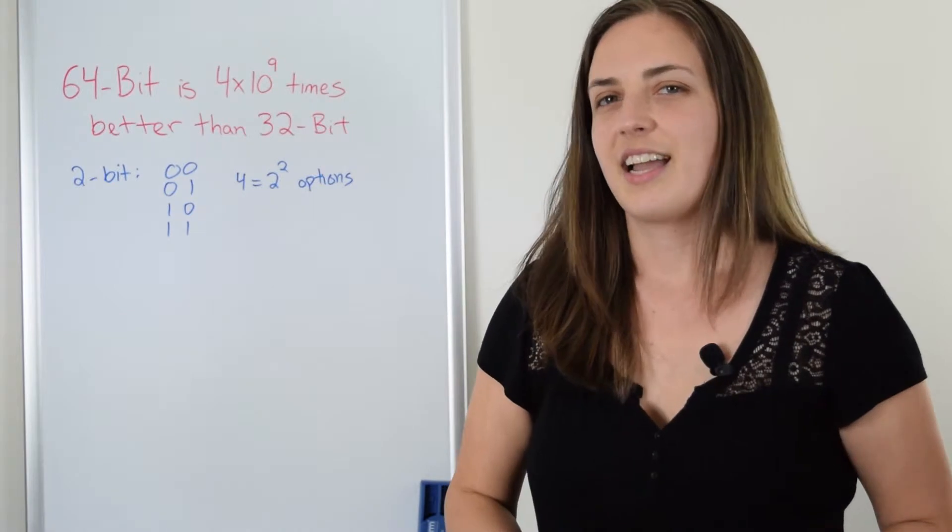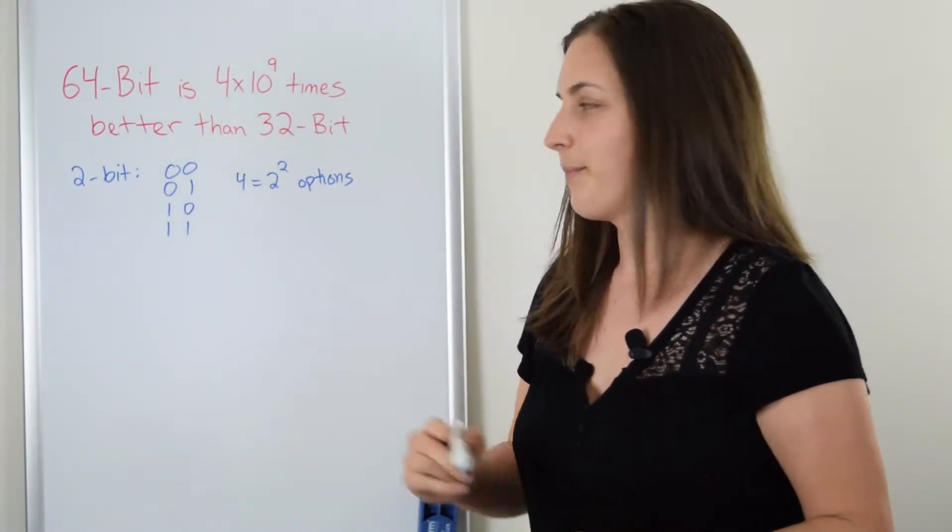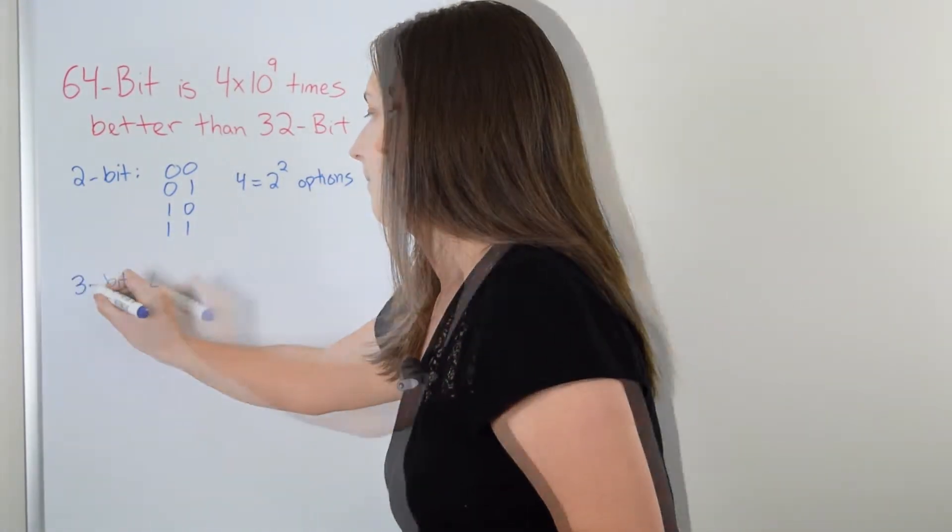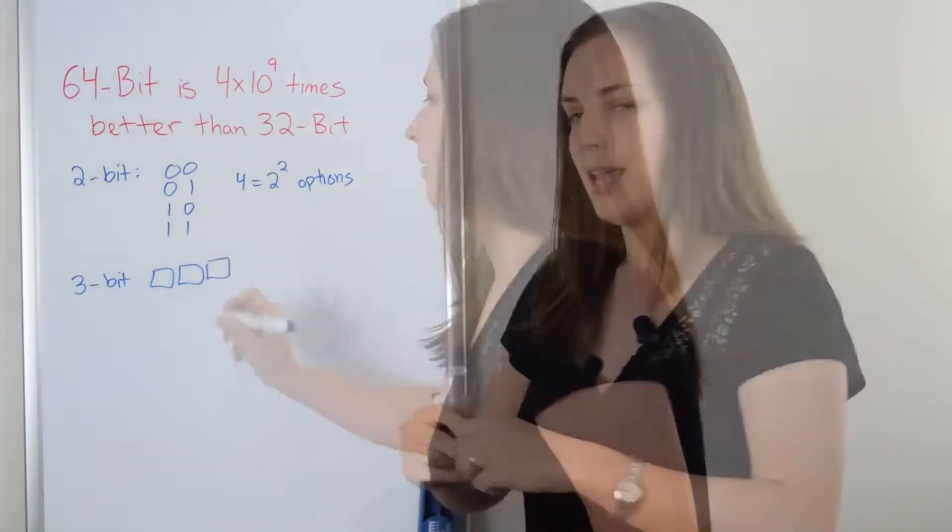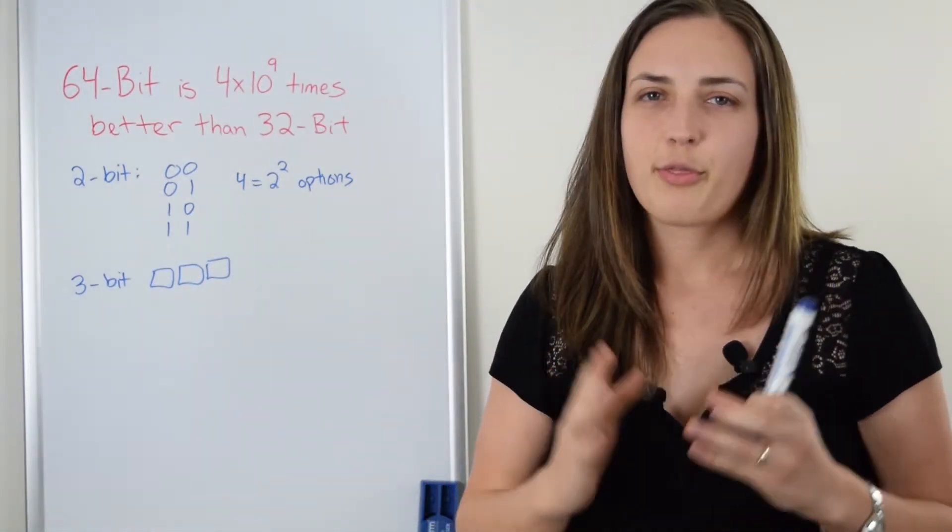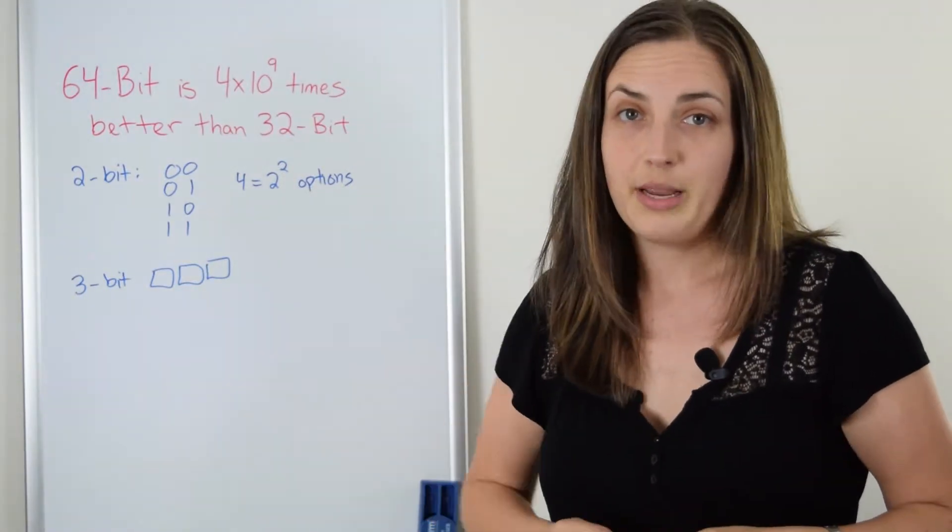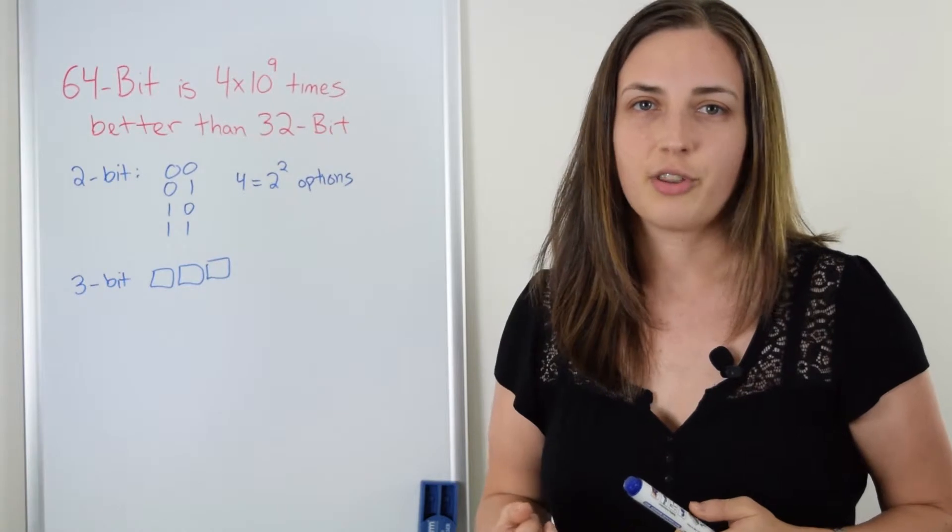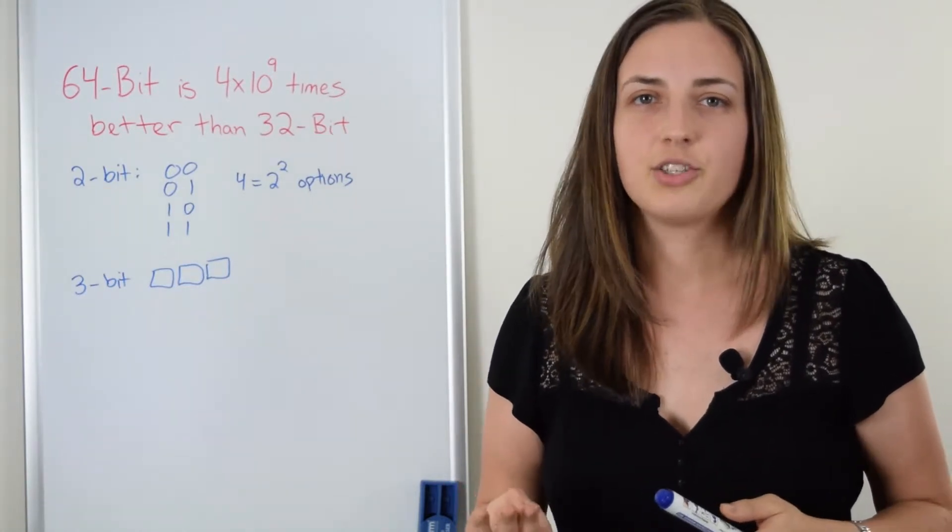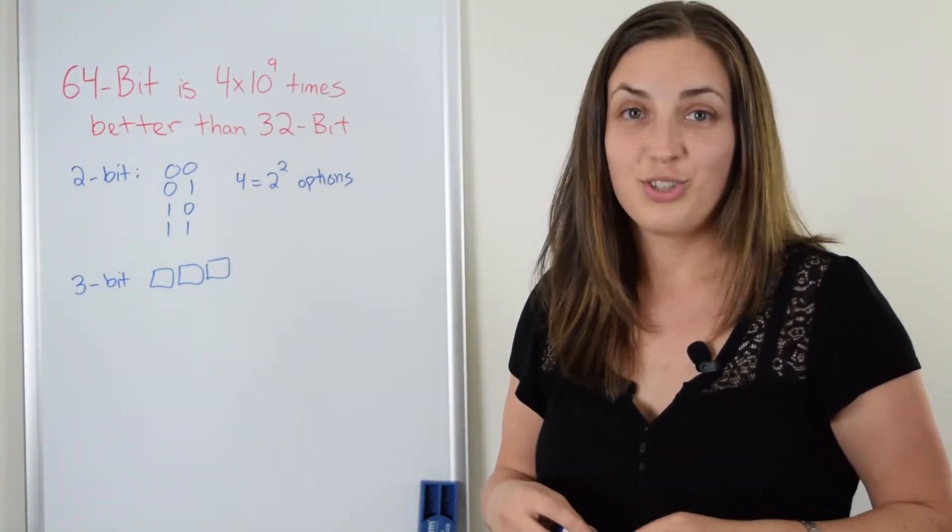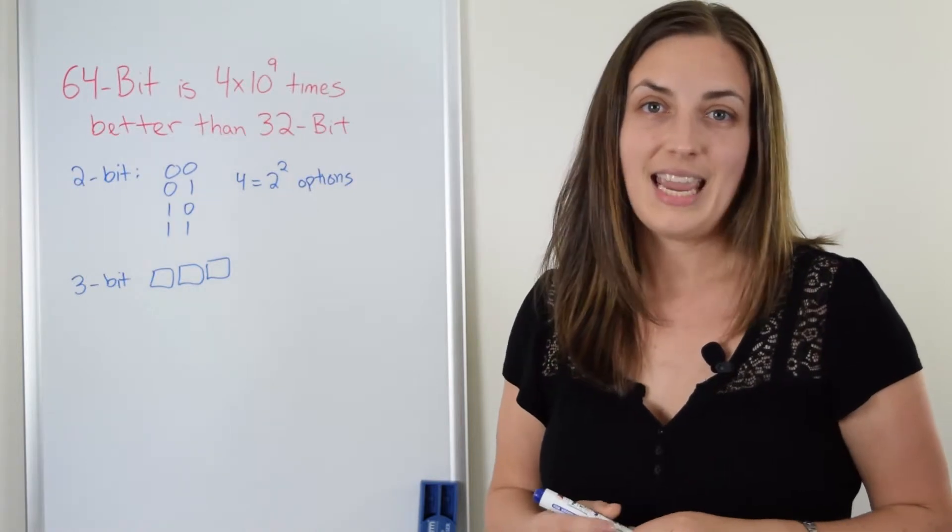Let's compare that to the idea of a three-bit system. In a three-bit system, you have three positions and each position can have a zero or a one. So you can have two options for the first, then two for the second, then two for the third. And that gives you two to the power of three, which equals eight options.